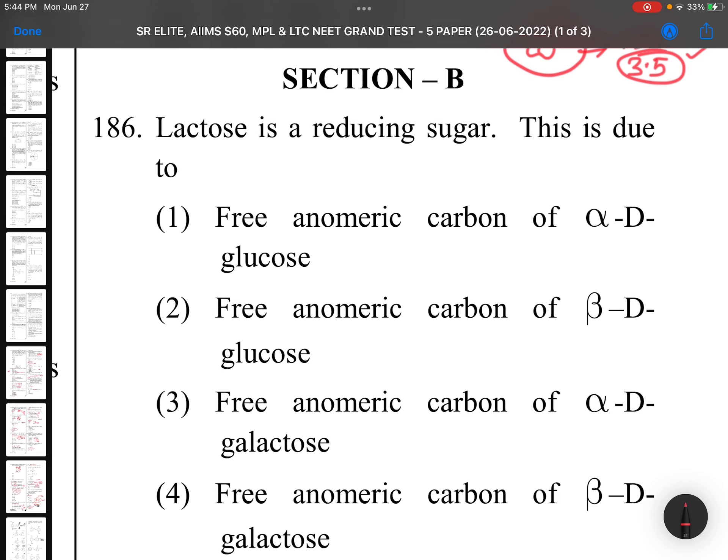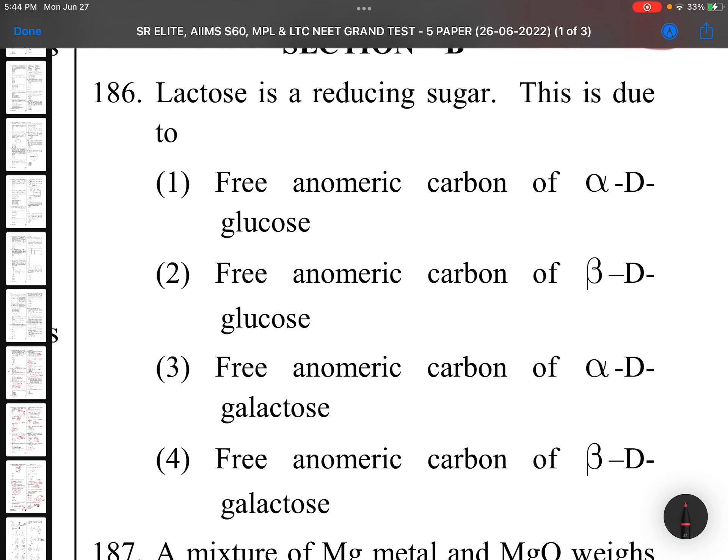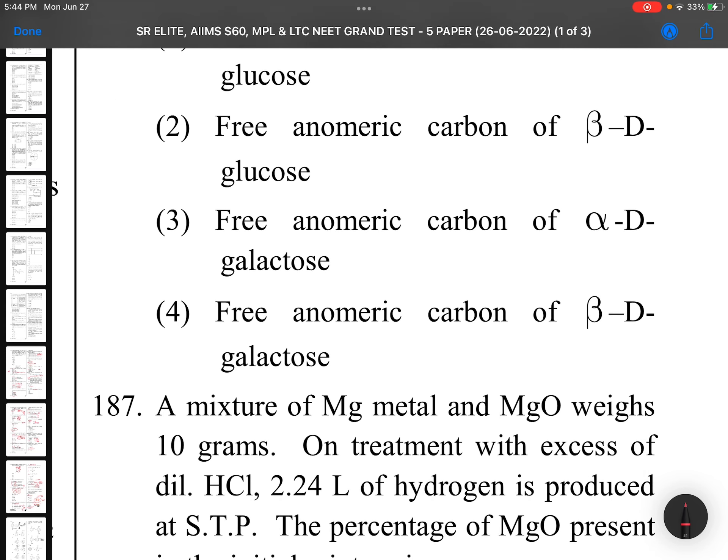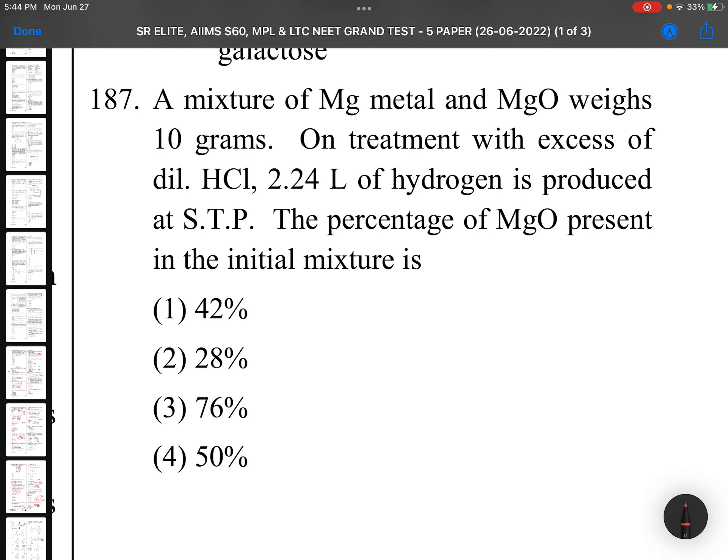Section B: You need to answer only 10 out of 15 questions. Question 186: Lactose is reducing sugar due to free anomeric carbon of beta-D-glucose - completely memory-based. If chance is there, skip these questions.